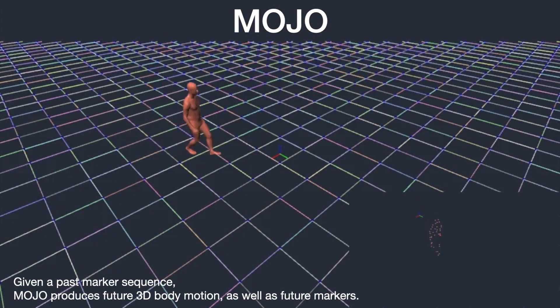To overcome these limitations, we propose MOJO, which predicts markers on the body surface instead of joints inside the human body. Given a marker sequence from the past, MOJO predicts future body motions by predicting future marker sequences.